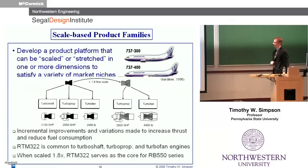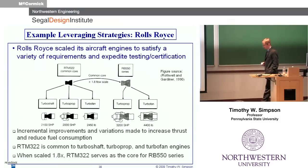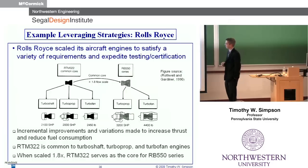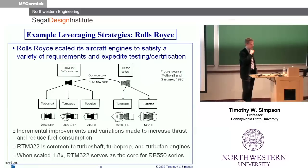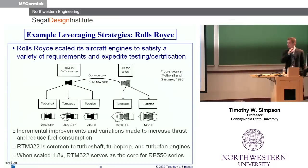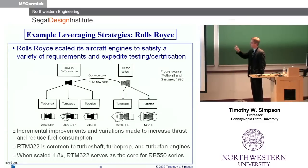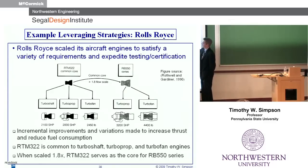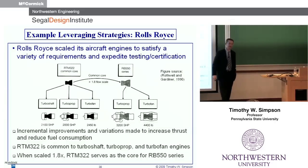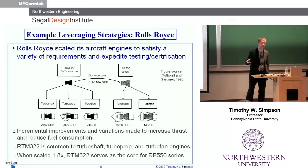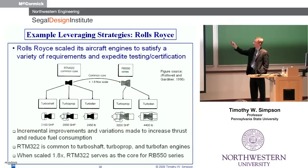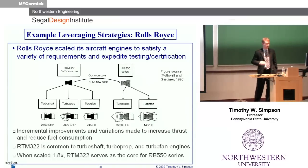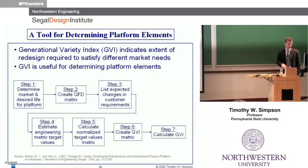At the component level too, scaling and stretching. In the aircraft industry, the Rolls-Royce RTM 322 engine: the base engine was then leveraged to three different ones — turboshaft, prop, and fan. They actually scaled it by a factor of 1.8 to create a new series. Where was the return on investment? It was in expediting the testing and FAA certification process, because they showed this was a scaled version of an earlier one that had already gone through the whole certification process, so they were able to field the new one much more quickly.